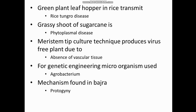Meristem tip culture technique produces virus-free plants because there is absence of vascular tissues in the apical portion. For genetic engineering, the most used microorganism is Agrobacterium, which is mostly used as a vector in genetic engineering.